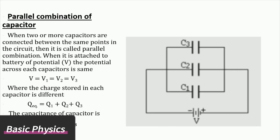The charge stored in each capacitor is different: Q_eq = Q1 + Q2 + Q3. The capacitance of capacitor is C_eq = C1 + C2 + C3. When capacitors are attached in parallel combination, their equivalent capacitance equals the sum of all capacitances of capacitors.